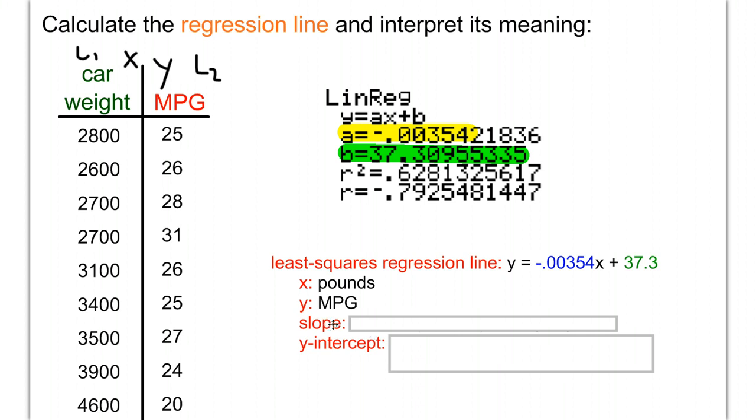For the slope, look at both the number and units. In algebra terms, y equals mx plus b, the slope is m. It's the number right next to x in slope-intercept form. Our slope is negative 0.00354. That's the number part. The a value is always your slope on the calculator.